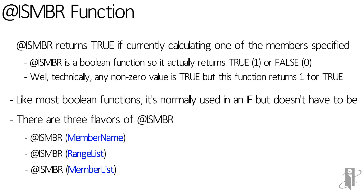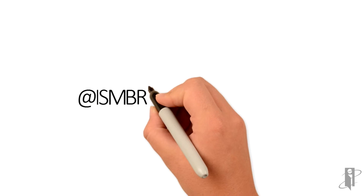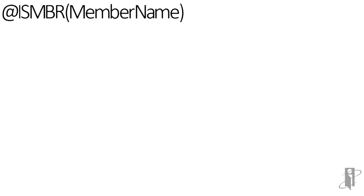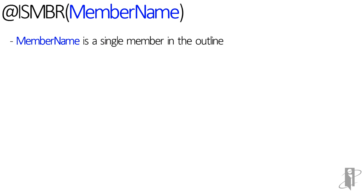So in our case, if the member being calculated is either the member name, the range, or the member list being specified, we're going to return a true, which is a one, or a false, which is a zero. The most commonly used syntax for isMember is isMember and then a specific member name.